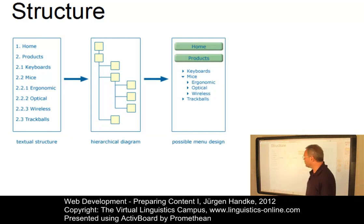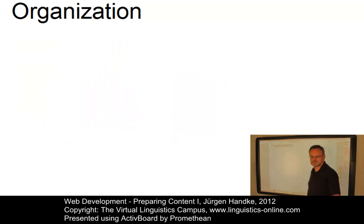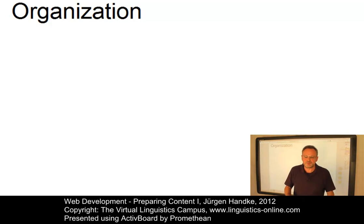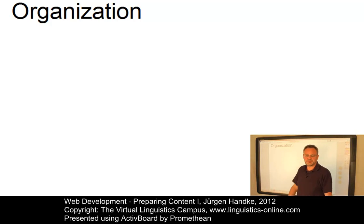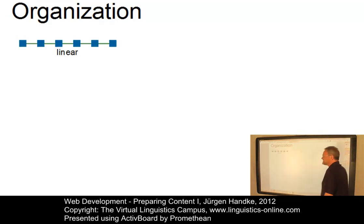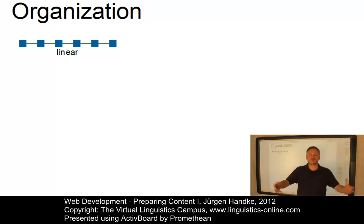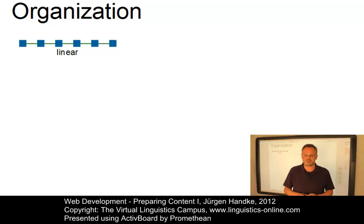Depending on the users of a website and the structure of its content, there are several organization schemes more or less suitable for the goal one wants to achieve. A possible scheme is the linear scheme, which is good for processes, stories, and moving through ordered lists of similar items. However, it can be time-consuming, so linear sequences should be kept short.